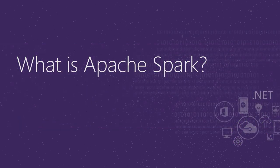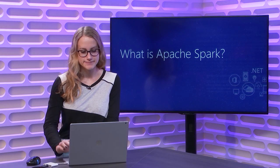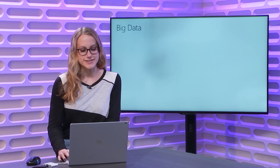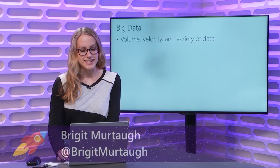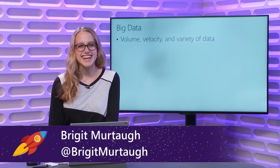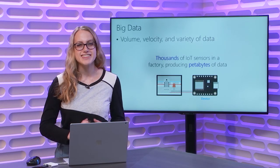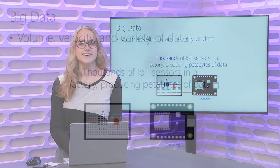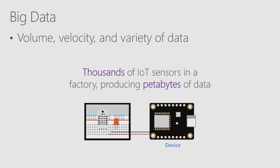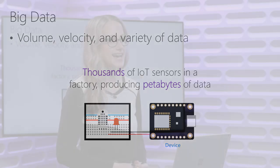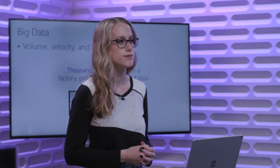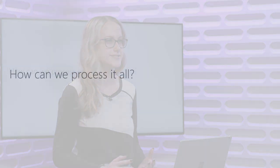Let's start off with what is Apache Spark? Big data means that there's an increase in volume, velocity, and variety of data. Take for instance a factory — there can be thousands of Internet of Things sensors in a factory, each producing petabytes of data. While it's great to have that much data so we can understand how our factory is performing and ways to improve the equipment, how can we actually process it all when we have that much?